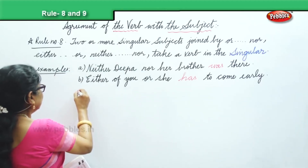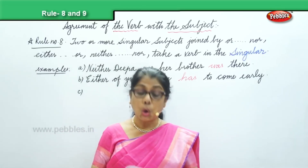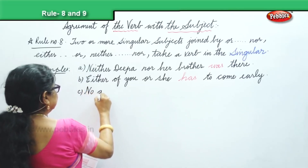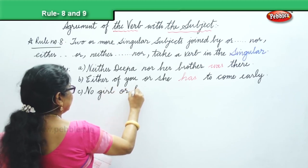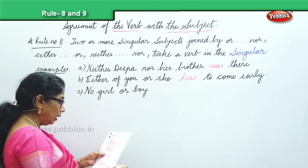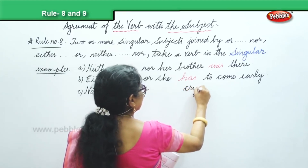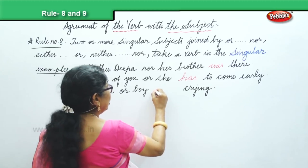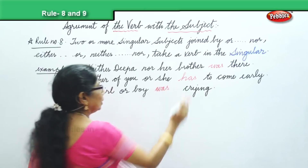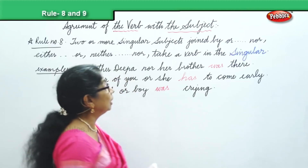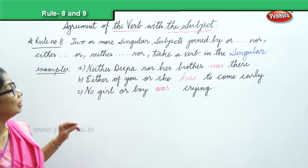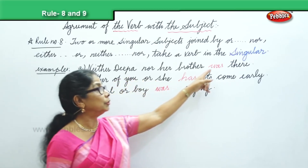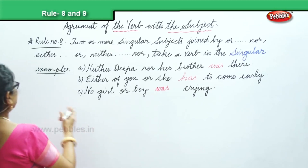One more example: 'No girl or boy — dash — crying.' No girl or boy was crying. 'Was' is the singular form of the verb. That's rule number eight: when two or more singular subjects are joined by or or nor, the verb is always in the singular form.